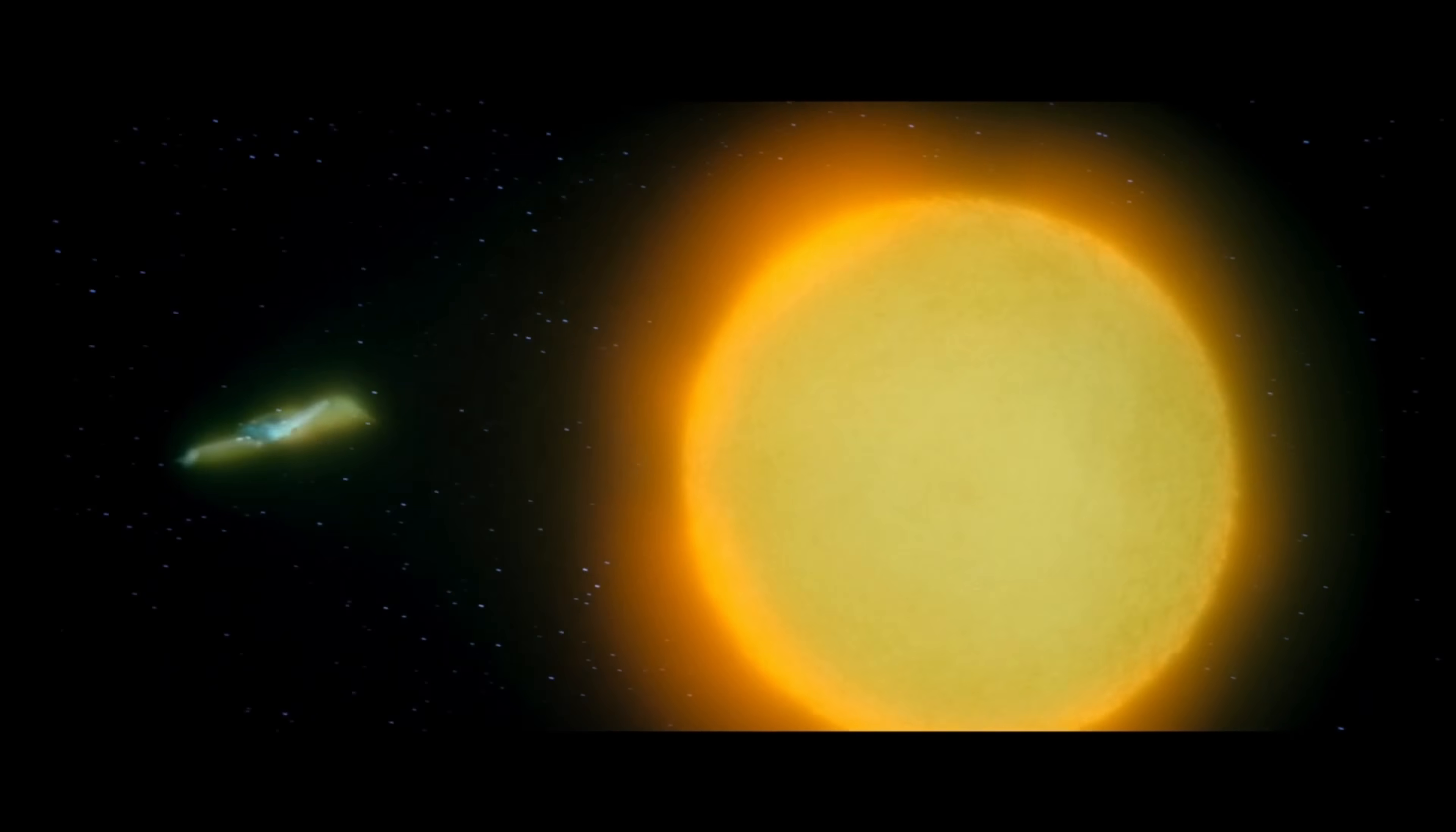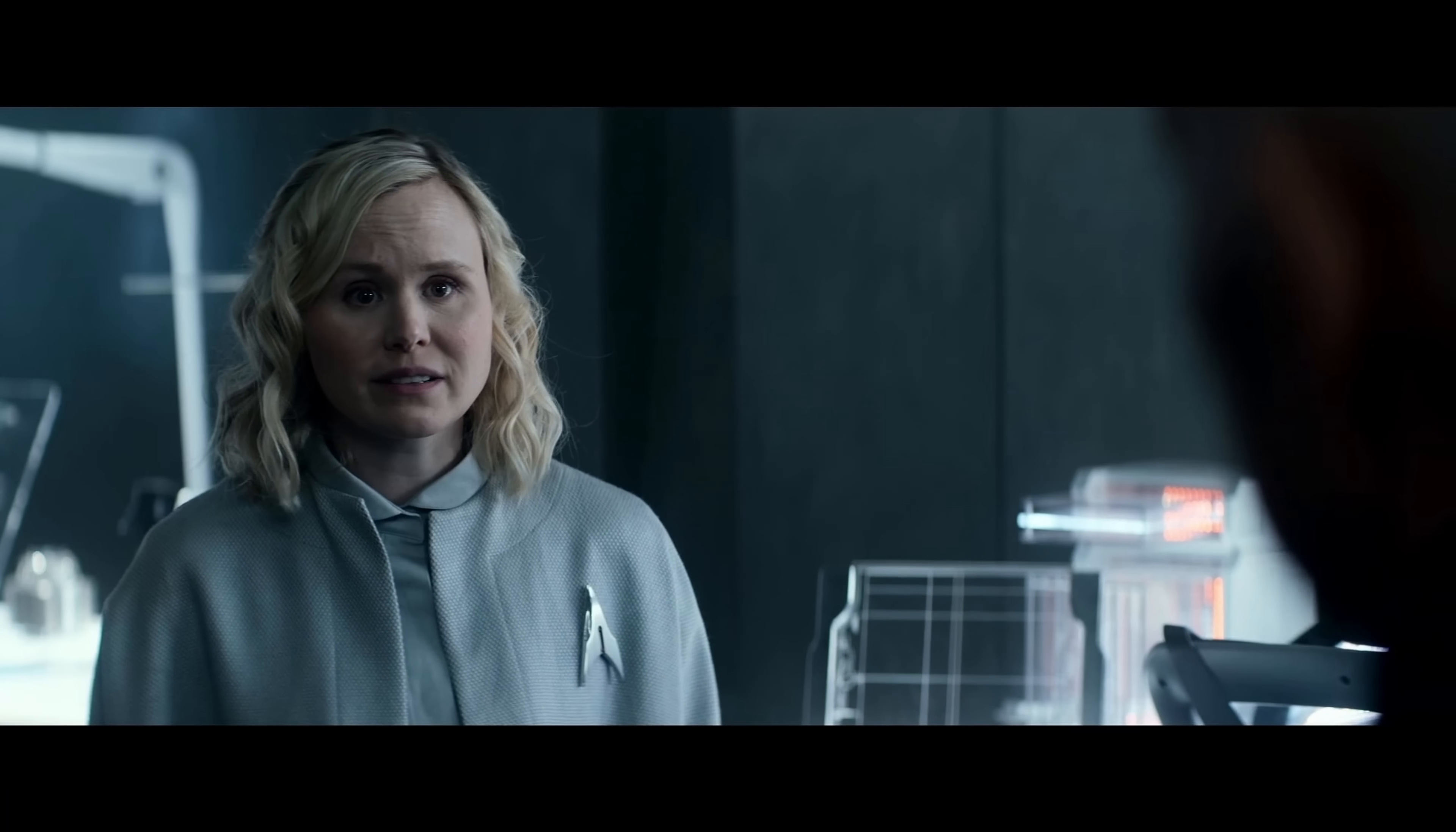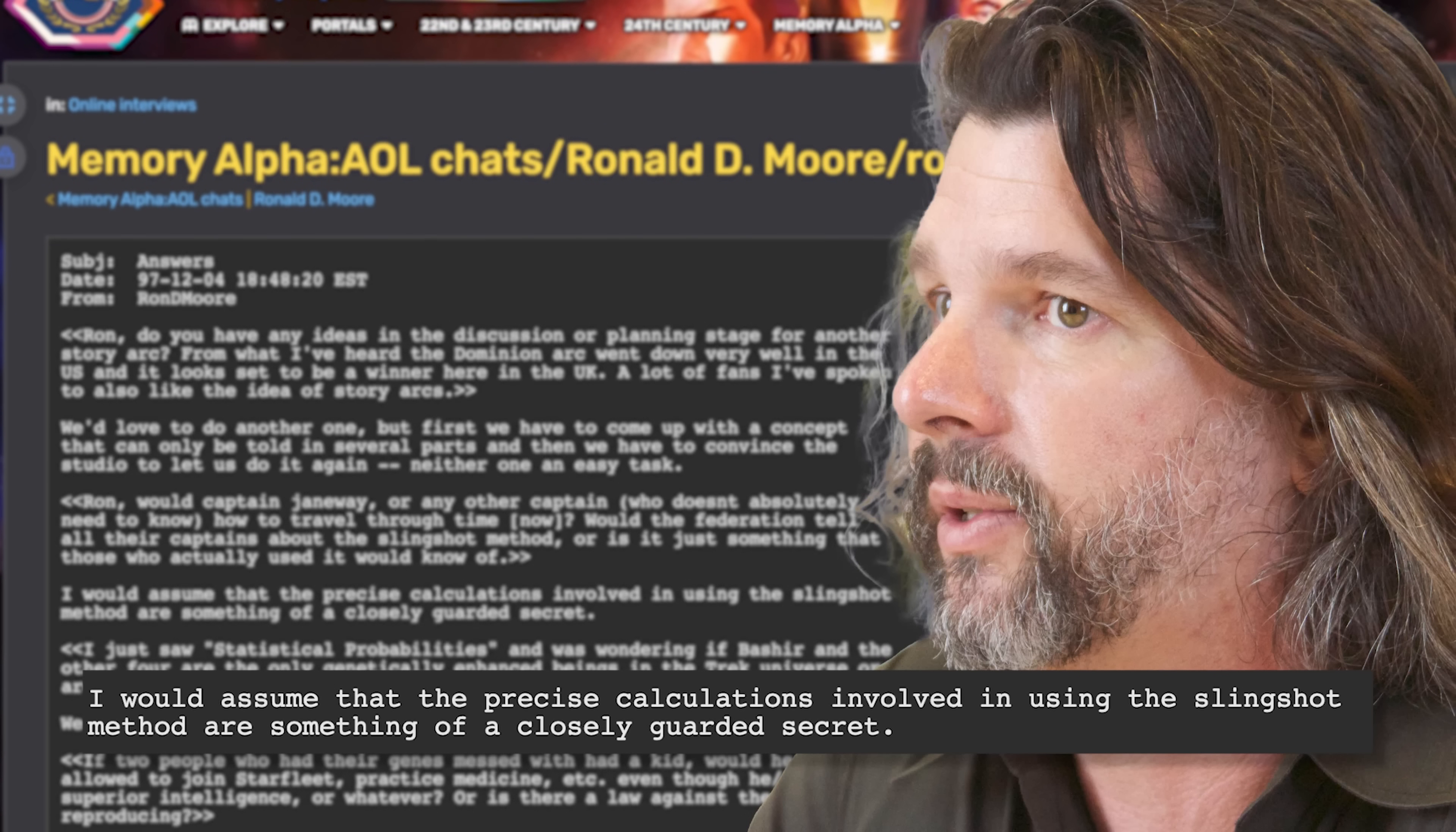Performing this maneuver requires extremely precise calculations, with factors including the availability of fuel components, acceleration, and mass of the vessel through the time continuum. Performing these calculations requires an intelligence that can isolate the divergence and micro-shift of any chronotonic radiation. Ronald D. Moore has also suggested that the precise calculations involved in using the slingshot method would probably be something of a closely guarded secret.